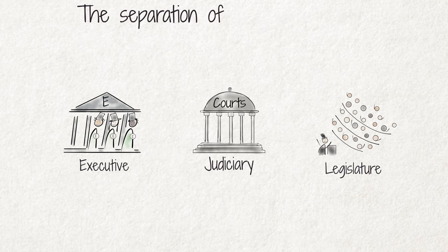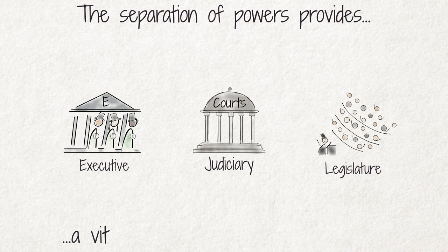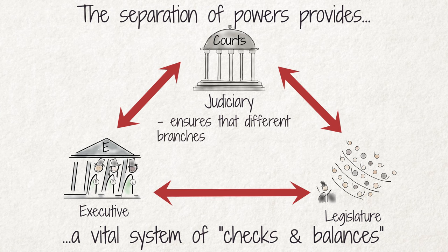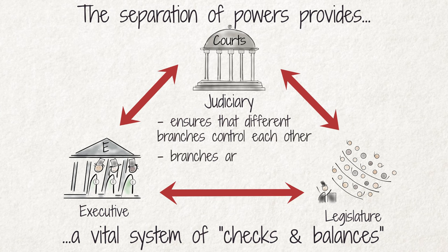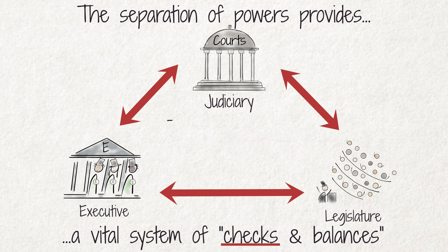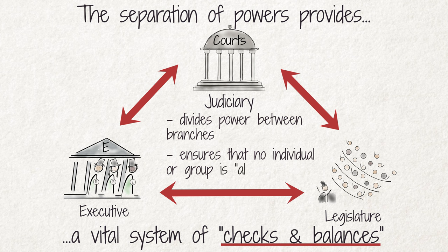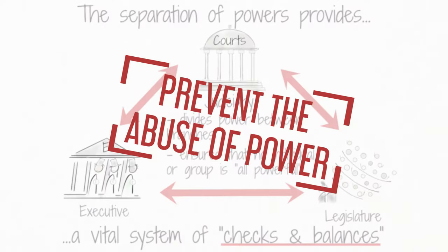The separation of powers is important because it provides a vital system of checks and balances. It ensures that the different branches control each other, making them accountable to one another — these are the checks. It divides power between the different branches of government, and this balance aims to ensure that no individual or group of people in government is all-powerful. Power is shared and not concentrated in one branch. The main purpose of the separation of powers is therefore to prevent the abuse of power.